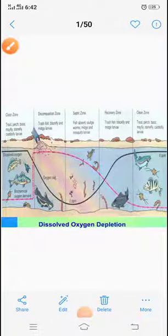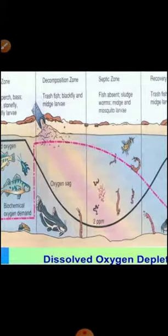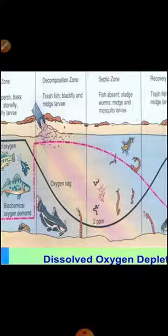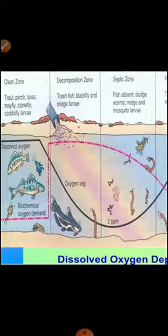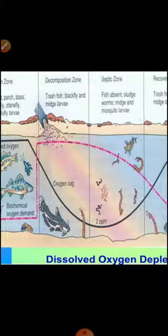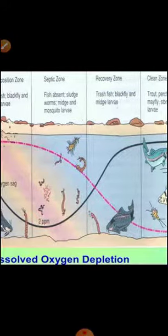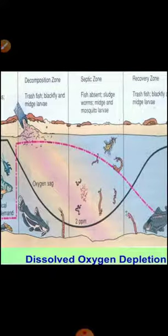We will now move forward to the concept of self-purification. The whole mechanism of water quality management in rivers clearly indicates that the natural processes taking place in river systems have the capacity to deal with pollution loads. Whatever the level of pollution load may be, microorganisms are activated and the level of pollution load is reduced as the drain moves forward.